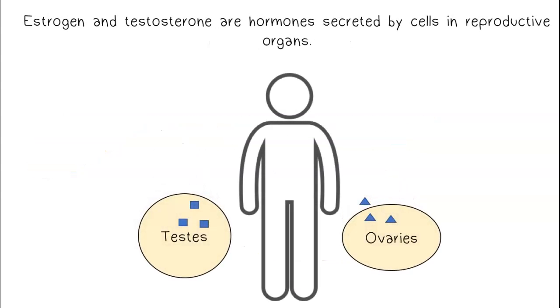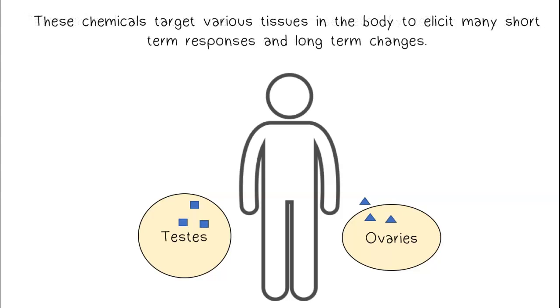Estrogen and testosterone are hormones secreted by cells in reproductive organs. These chemicals target various tissues in the body to elicit many short-term responses and long-term changes.